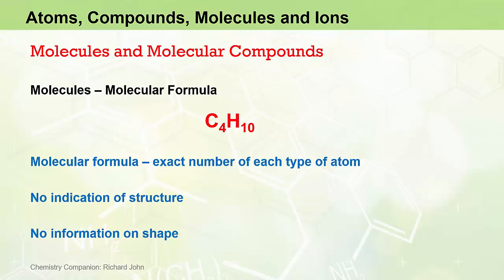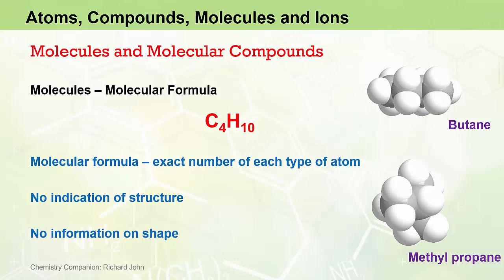Both structure and shape are very important in determining the overall chemical and physical properties of molecules. It turns out that the C4H10 molecular formula is the molecular formula for two different molecular compounds: butane and methylpropane. Different compounds with the same chemical formulas are said to be isomers of each other. While butane and methylpropane are isomers and have the same molecular formulas, they have quite different structures and very different chemical and physical properties.